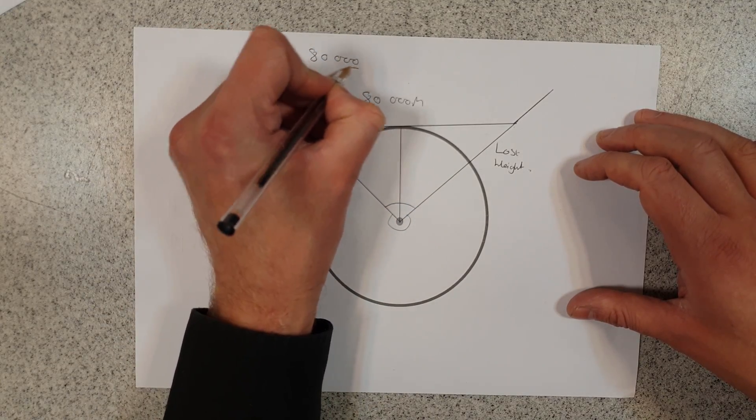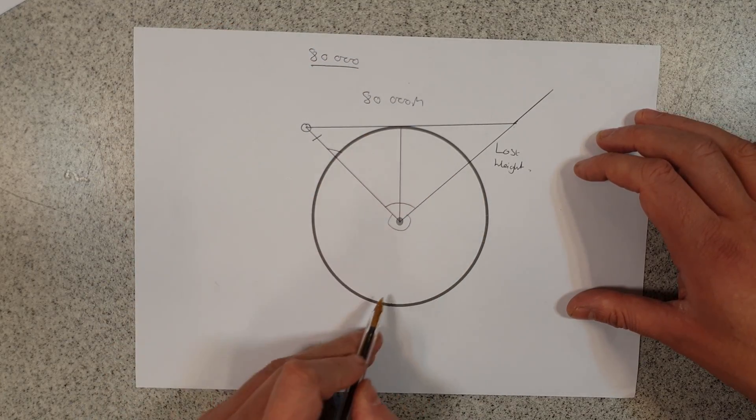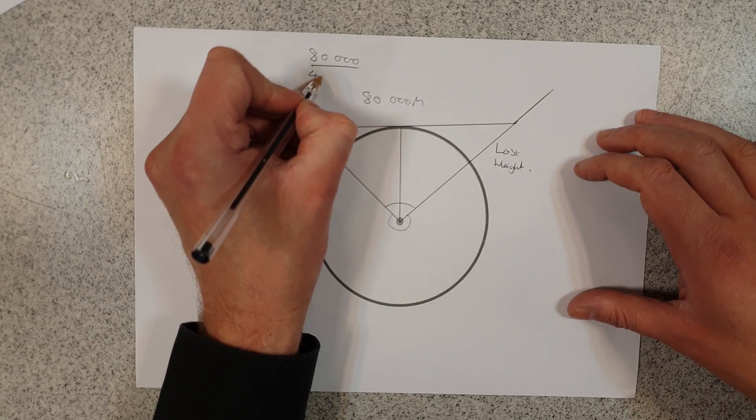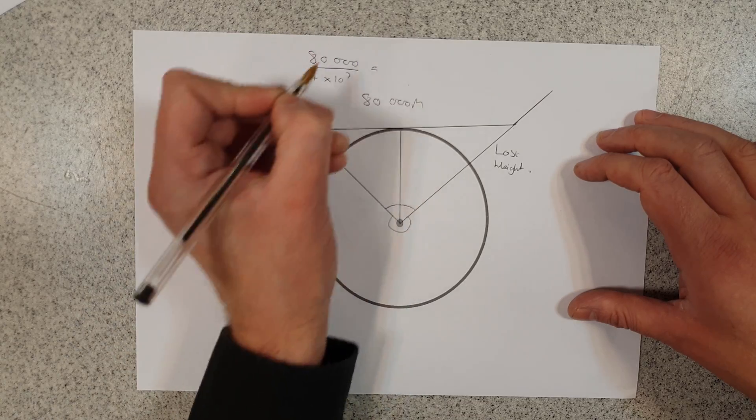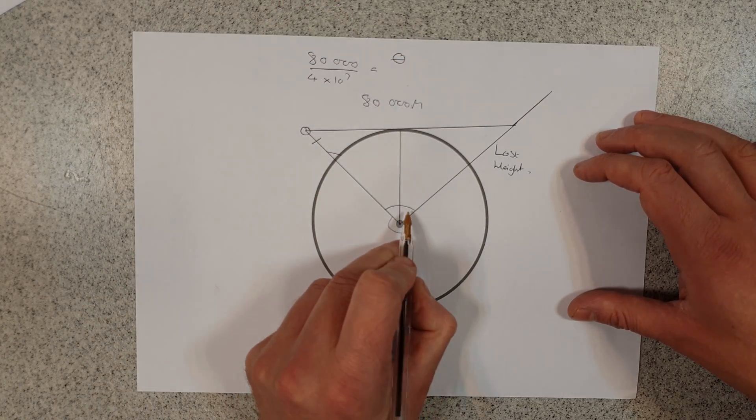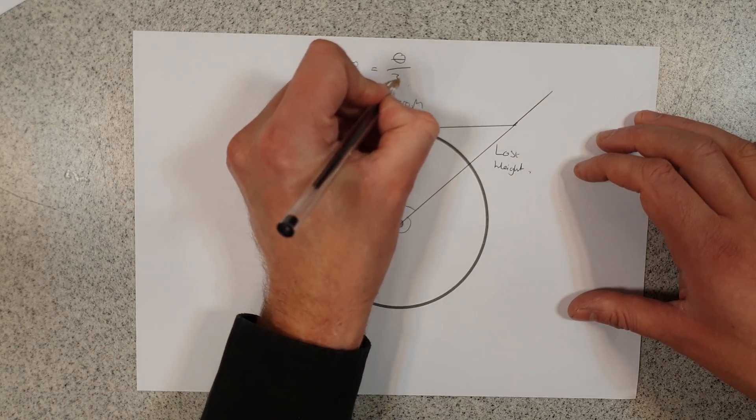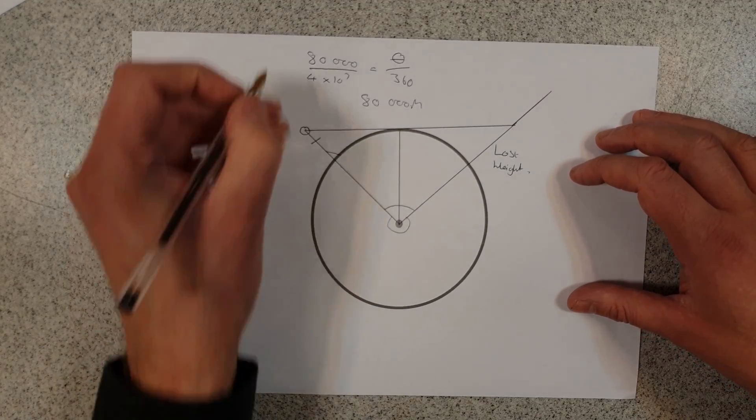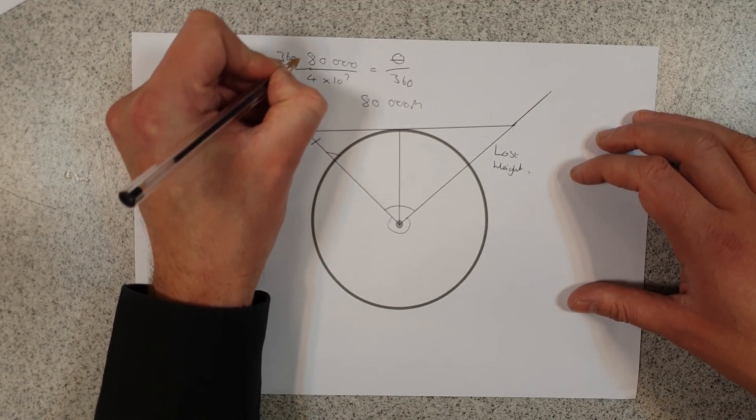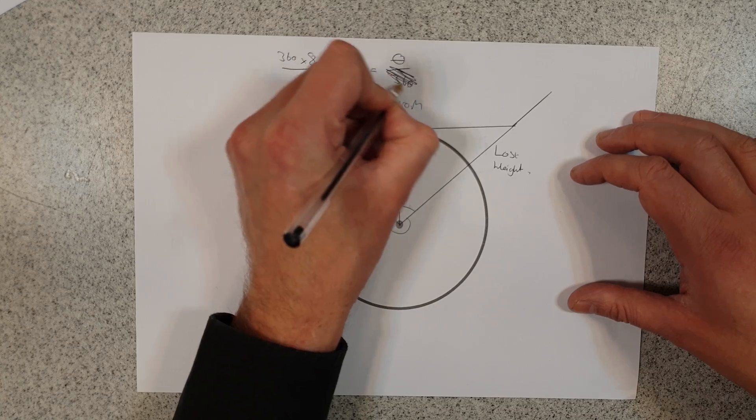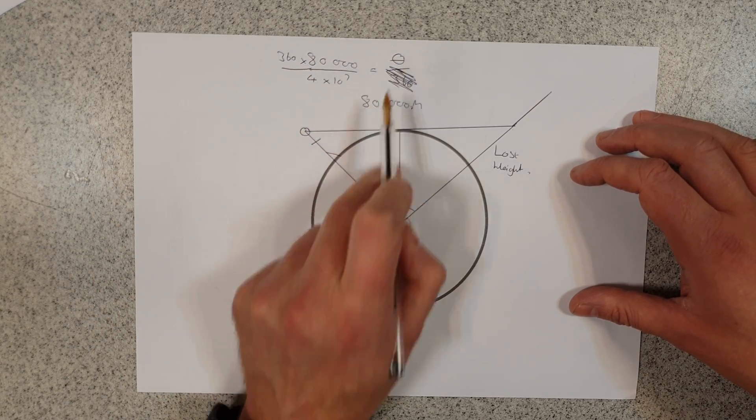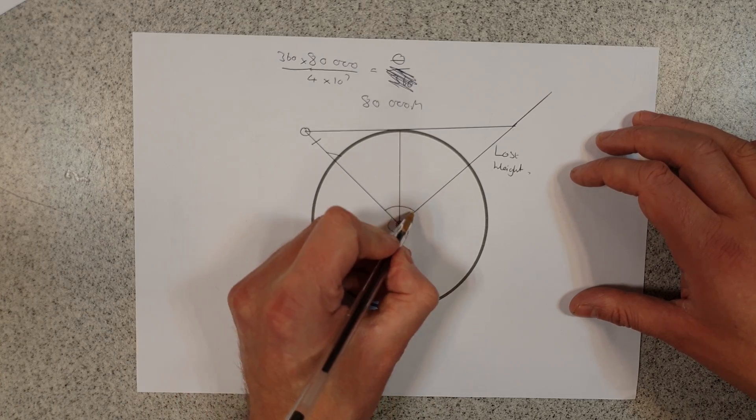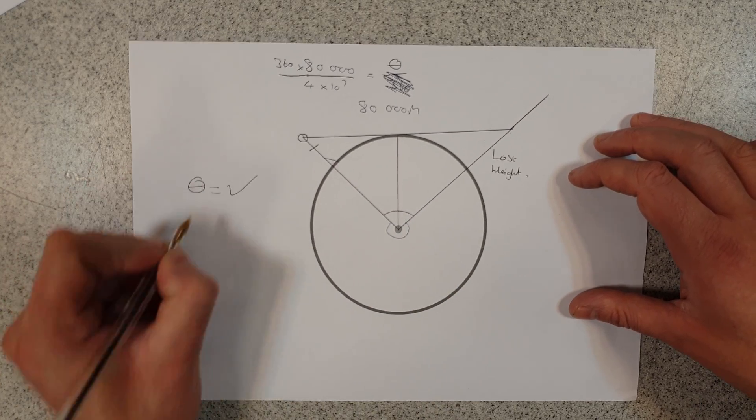So 80,000 divided by the full circumference of the earth, which is about 40 million meters (4 times 10 to the 7), is going to equal the angle—which I'm going to call theta—divided by 360 degrees. What that means is 360 times 80,000 divided by the circumference is going to give me this angle. So my first step is to work out this angle. We can tick that off—we've done it.